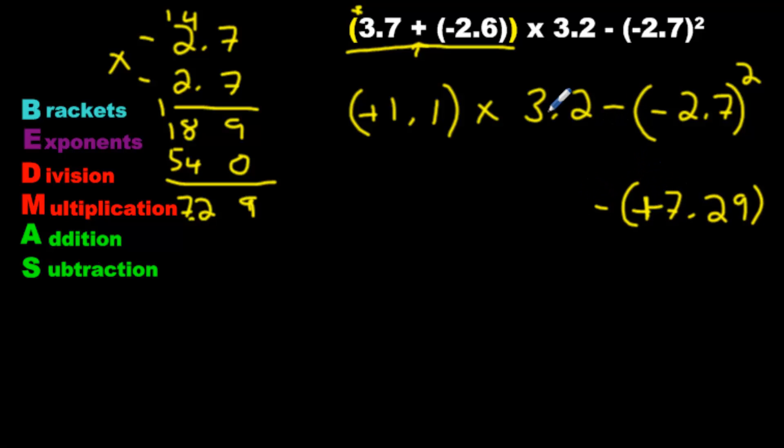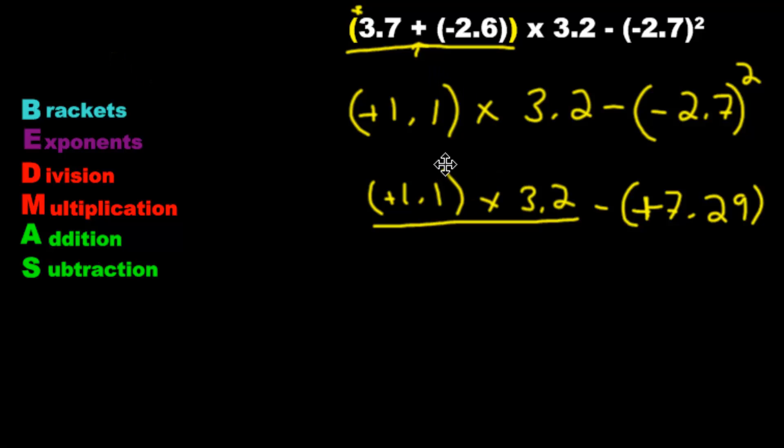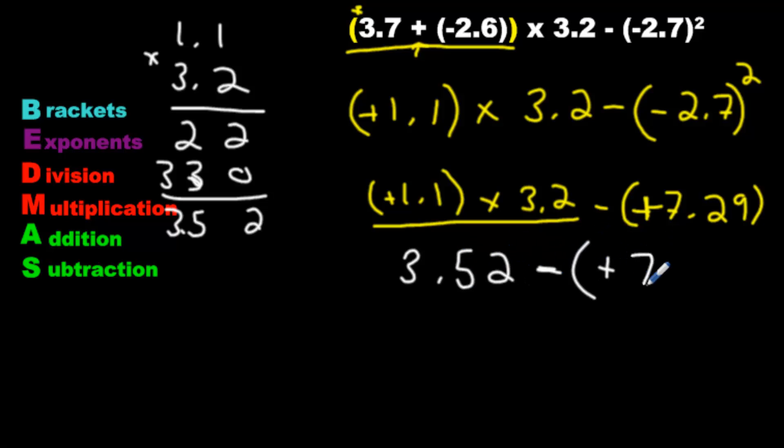We got our minus sign here. We bring down 3.2. We bring this down 1.1 positive and we move to the next step. Division and multiplication in the order that they appear. There is no division. Great. Okay. So we just do multiplication. Go ahead and try this. Try to beat me to it. See if you can get the answer before me. No calculators. So we're going to go 1.1 times 3.2. We multiply them. We're going to get 2 times 2 here and then 0. Put a 3 and 3 here. That's a 3, 2, 5, 3. Two decimal spaces. So two decimal spaces. 3.52 minus positive 7.29.